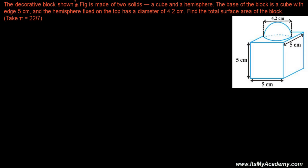The question says the decorative block shown in the figure is made with two solids — a cube and a hemisphere. The cube is at the bottom and the hemisphere is placed on top. The base of the block is a cube with side 5 centimeters, so the length, breadth, and height are all 5 centimeters.